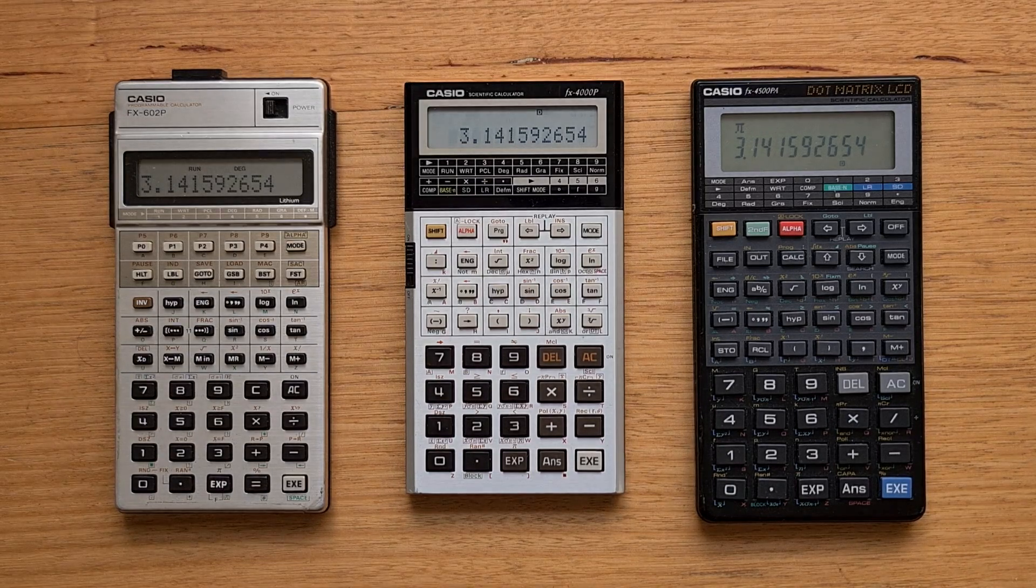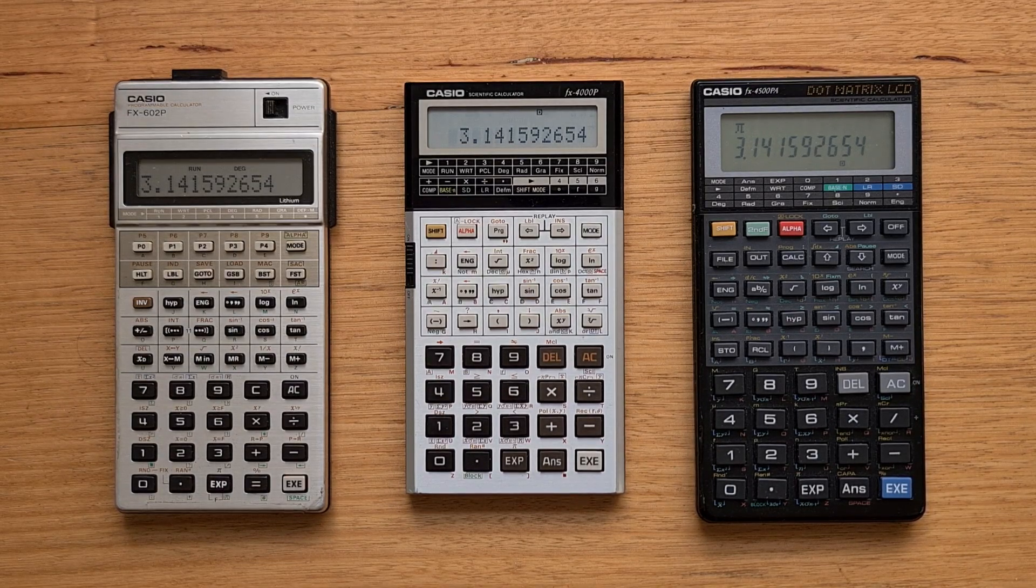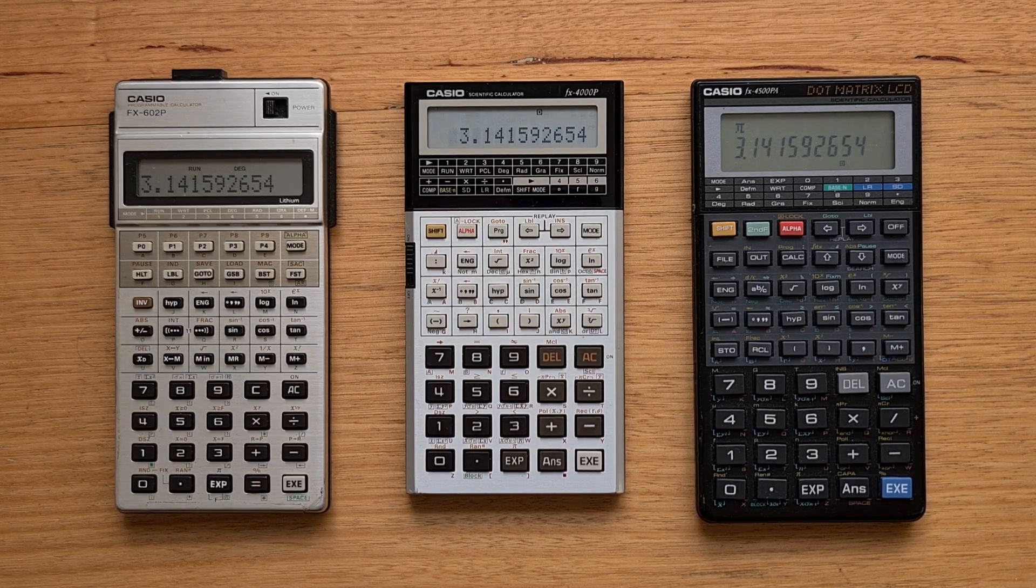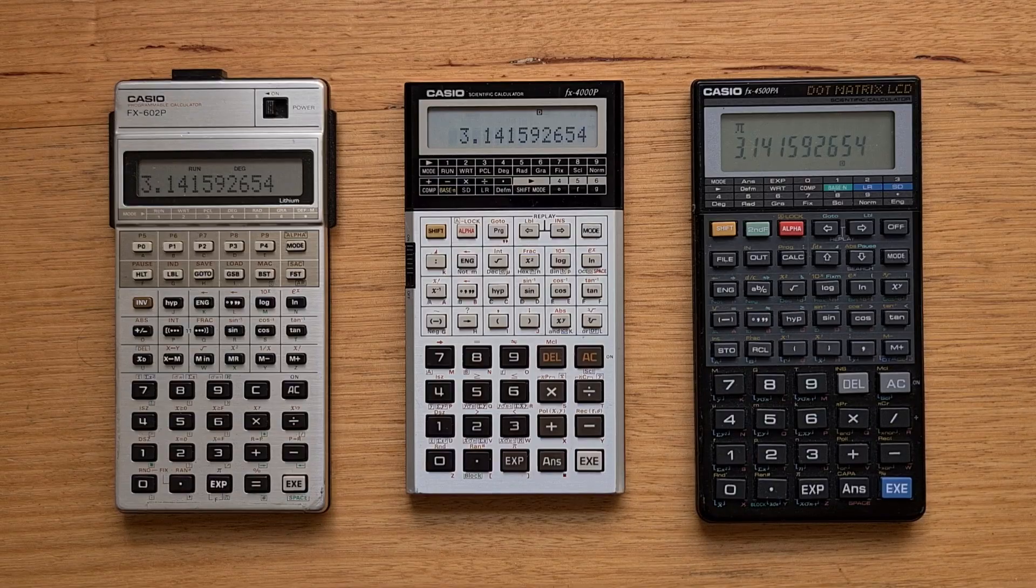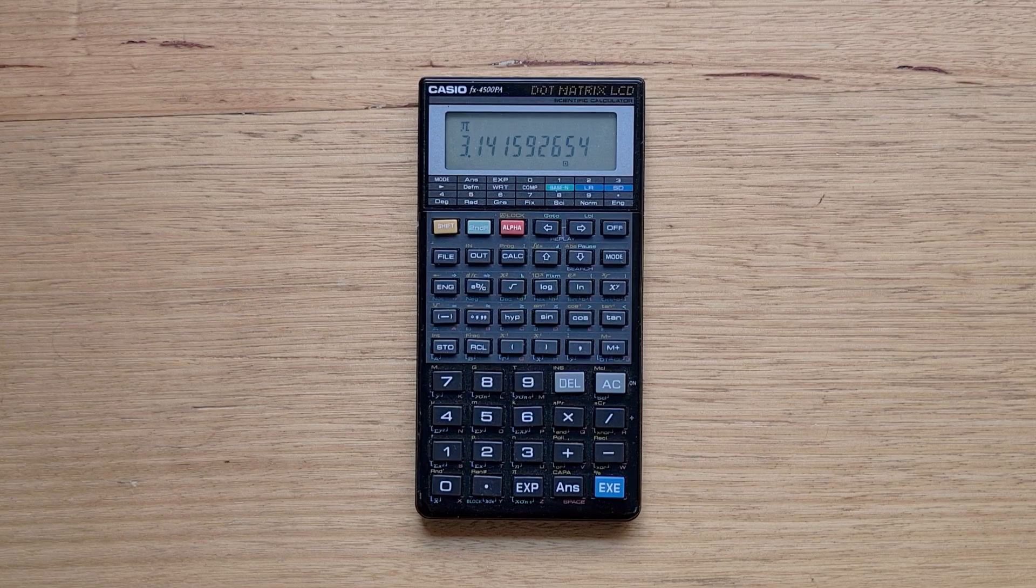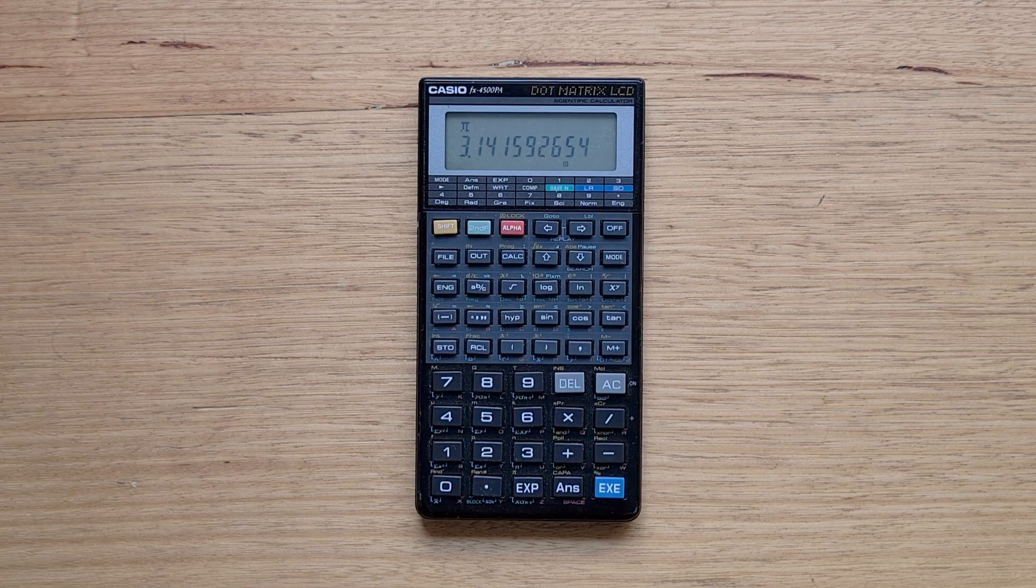This particular variant is the lower power PA model. It has the same functions as the original 4500P but takes a different battery and is very slightly slower. Physically, the 4500P has the same form factor as the early 80s Casio calculators with a plastic body and aluminum backplate.